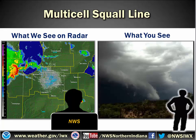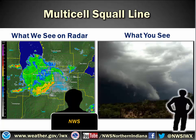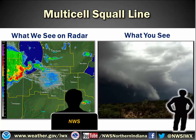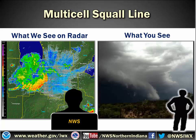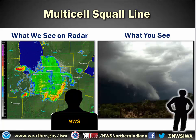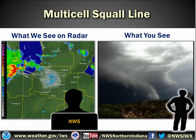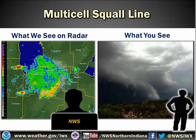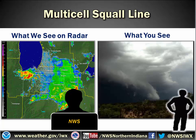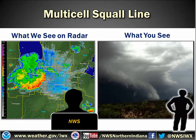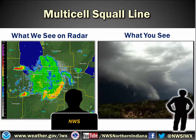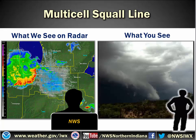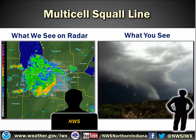On radar, you typically see something shaped like a bow, and where the arrow would be — right at the apex of that bow — is where the strongest winds typically occur. So if you see something like that coming towards you on your radar app, you know what to expect. In the field, you might see a shelf cloud, which signifies the approach of stronger winds.